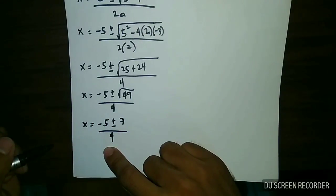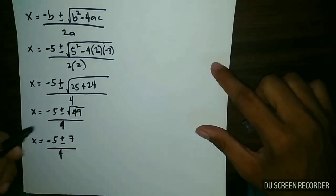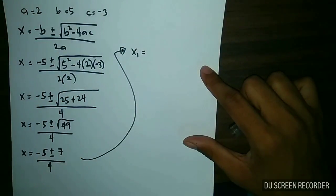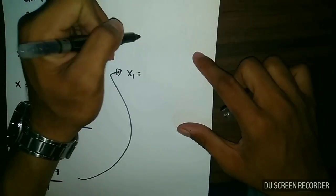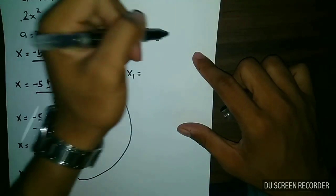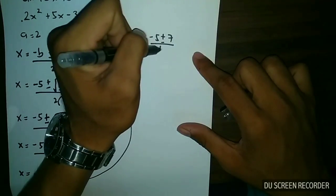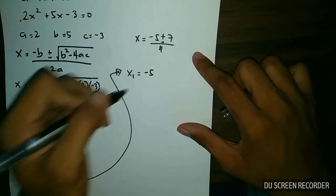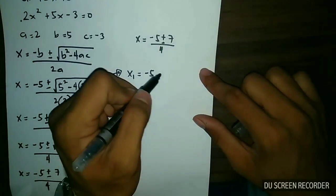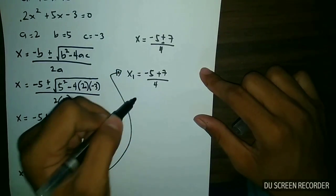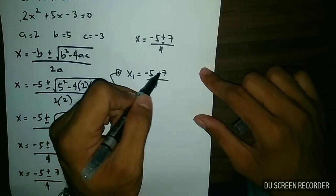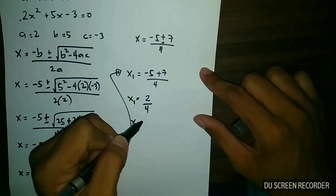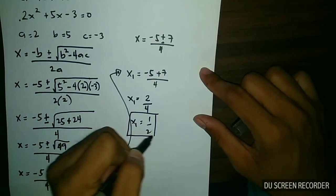Now we need to solve for the possible values of x. For x sub 1, we use the positive 7: x sub 1 is equal to negative 5 plus 7, all over 4, which equals 2 over 4. Simplifying, x sub 1 is equal to one half. This is the first value of x.